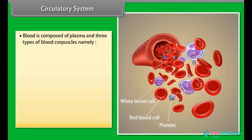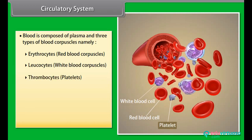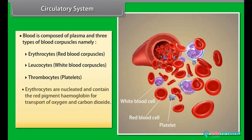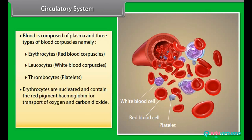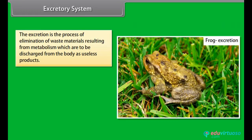The renal portal system is the venous connection between the kidney and lower parts of the body. Blood is composed of plasma and three types of blood corpuscles: erythrocytes (red blood corpuscles), leucocytes (white blood corpuscles) and thrombocytes (platelets). Erythrocytes are nucleated and contain the red pigment hemoglobin for transport of oxygen and carbon dioxide. Lymph lacks a few proteins, erythrocytes and platelets as compared to blood.